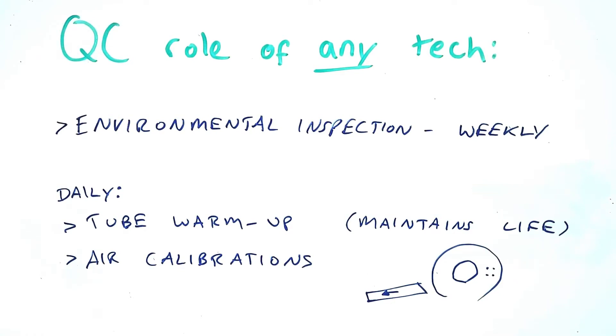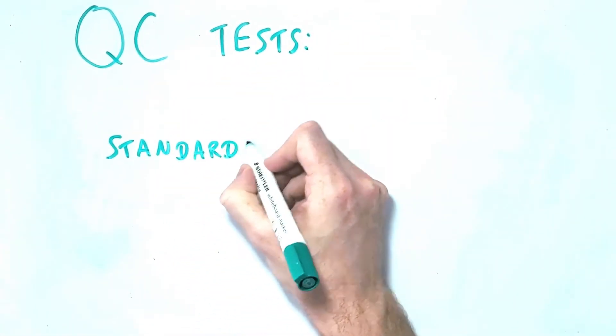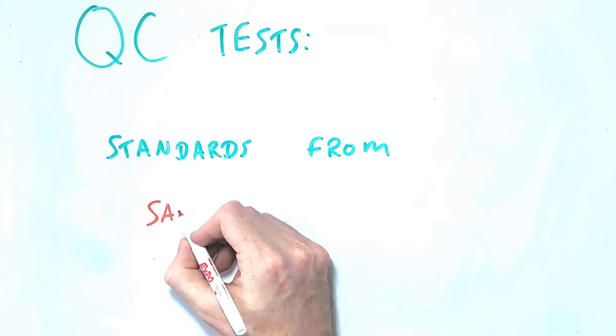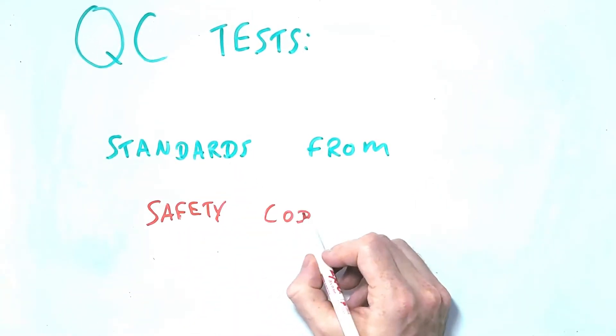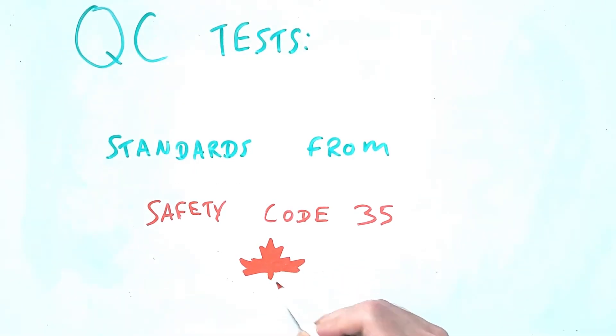These items are straightforward parts of a QC program and will be routinely performed by any technologist. Now we'll move on to the more involved QC tests, some of which may be performed by a dedicated QC tech. I'll be describing some of the limits and values which apply to these tests and all of these numbers come from the Canadian standards laid out by Safety Code 35. I encourage you to look directly at the appropriate reference material to learn the relevant standards as necessary.